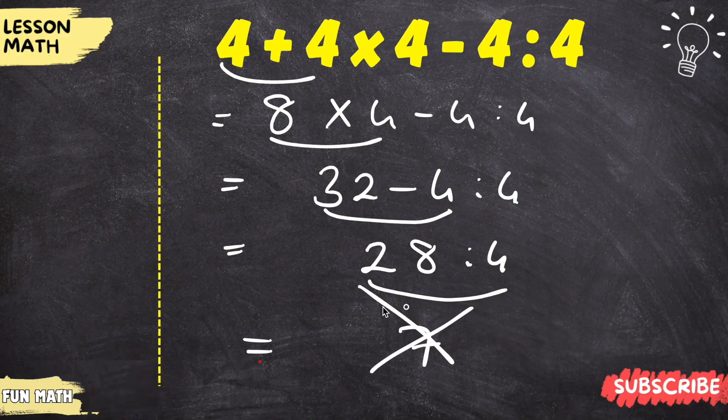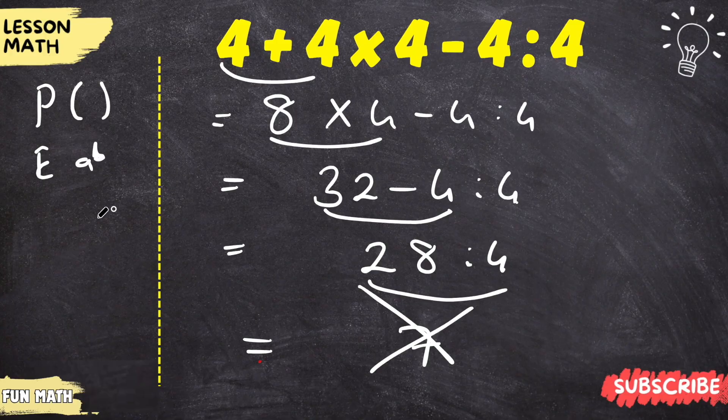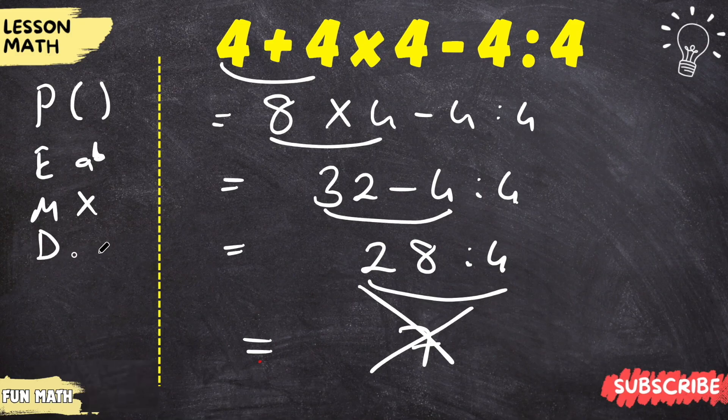We used a rule for ordering operations when solving problems like this. We called it PEMDAS for short. P is parentheses, E is exponents, M is multiplication, D is division, A is addition, S is subtraction.